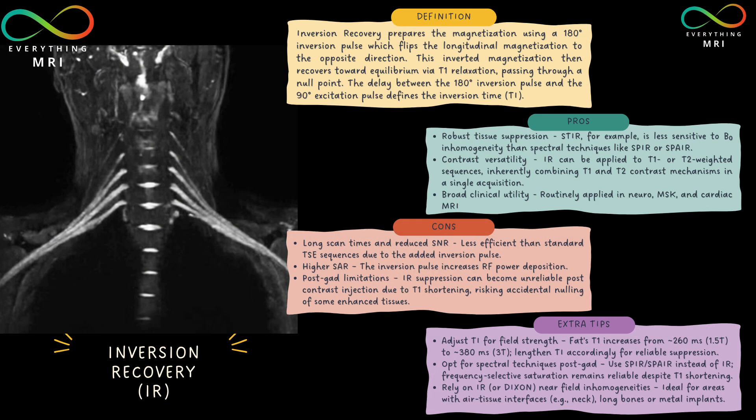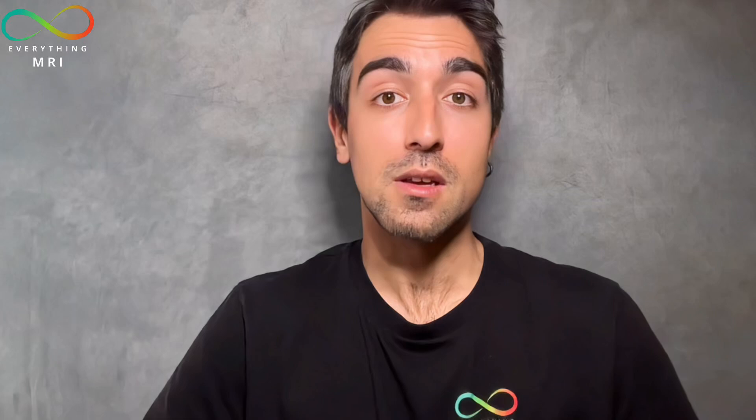There are areas where inversion recovery works better than other saturation techniques — for instance, anatomical areas with many interfaces between air, bones, and fat like the neck, or when covering long extensive areas like long bones. In cases with a certain degree of field inhomogeneities, sequences like STIR can be preferred over spectral saturation techniques. Inversion recovery is generally less sensitive to both B0 and B1 field inhomogeneities. That said, the Dixon sequence is becoming much more than just an option and should always be considered a valuable solution when dealing with field inhomogeneities.